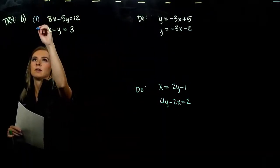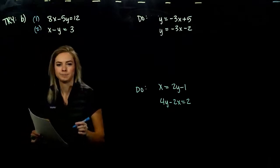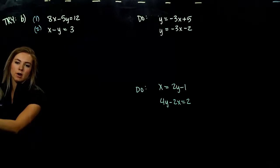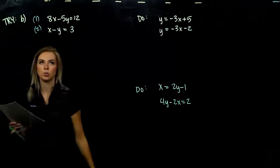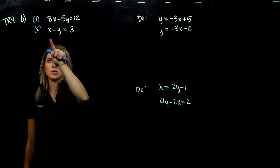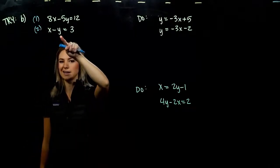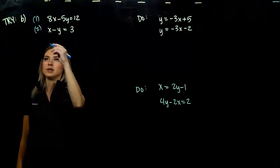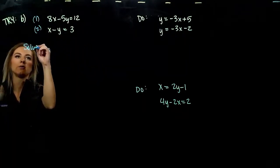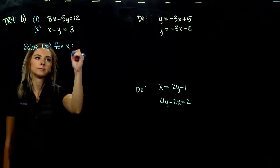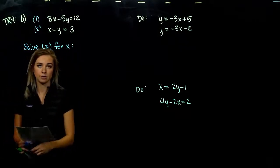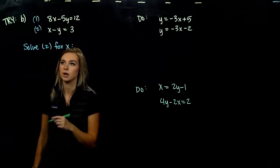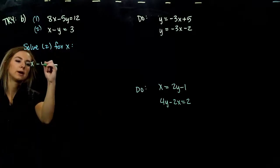For the second problem, what is the easiest variable to isolate? In equation 1, all variables have coefficients other than 1. In equation 2, x has coefficient 1 and y has coefficient negative 1. We want to work toward the positive so we don't have to divide by a negative, so we're going to solve equation 2 for x.